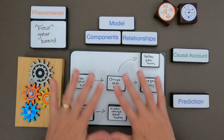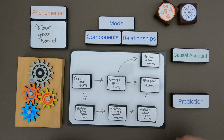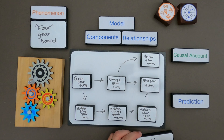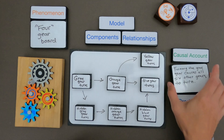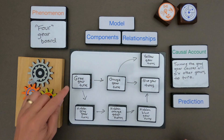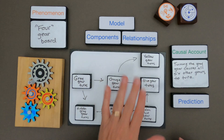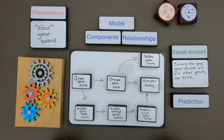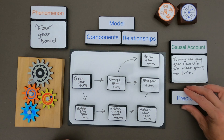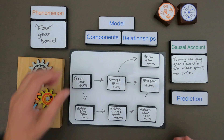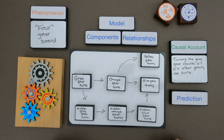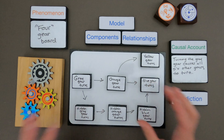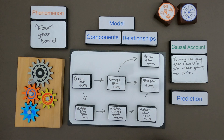A causal account is all the causes and mechanisms within the phenomena itself — basically a summary of all the causation. For my causal account what I said is: turning the gray gear causes all six other gears to turn. It's just a summary of the causal accounts, and then we can see that in the model itself. The last thing we have to do is make some kind of a prediction. That's the whole point of models — once I have the model I can make predictions about what happens if I take some of these out or add some.